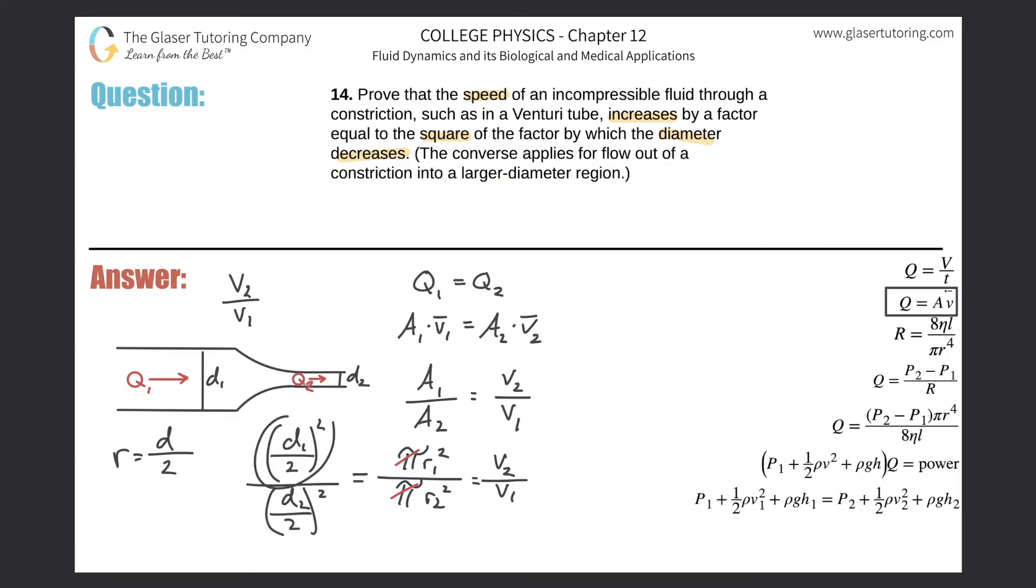Now, thinking about this mathematically, we can, since both the numerator and the denominator are both squared, we can essentially then combine this into kind of one simple ratio. If you also notice, these 2s will also cancel as well.